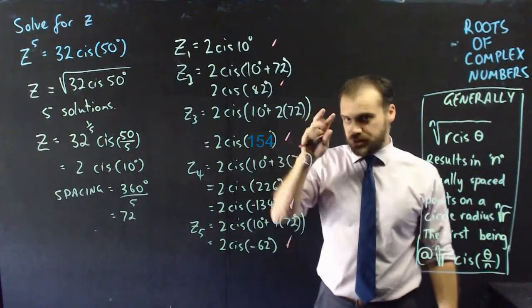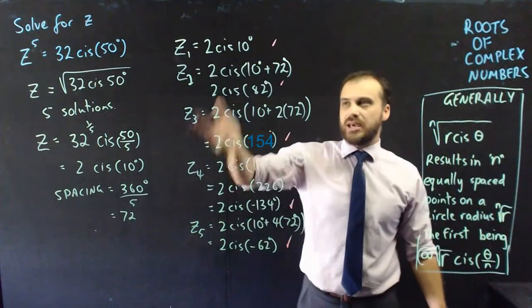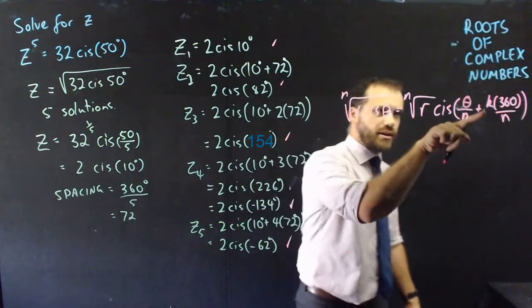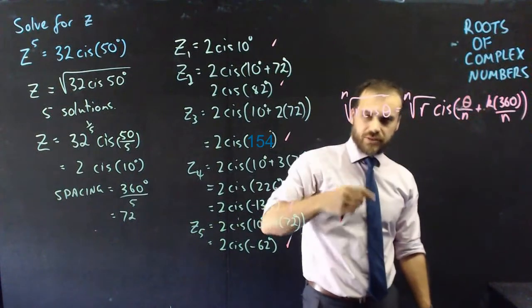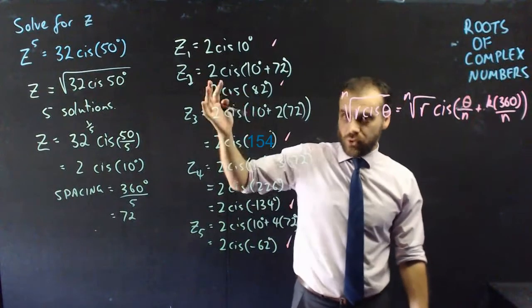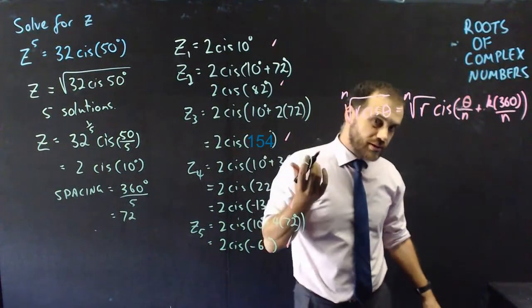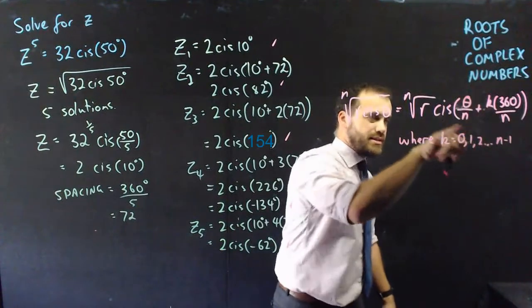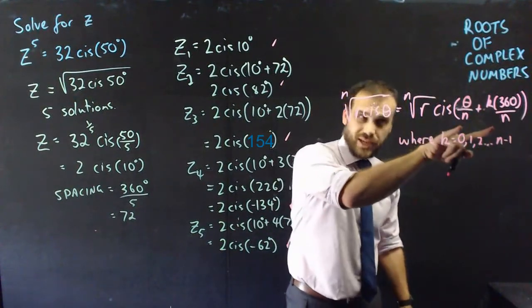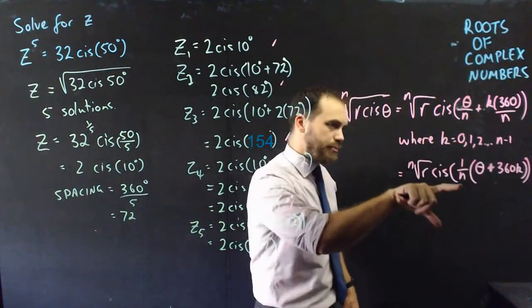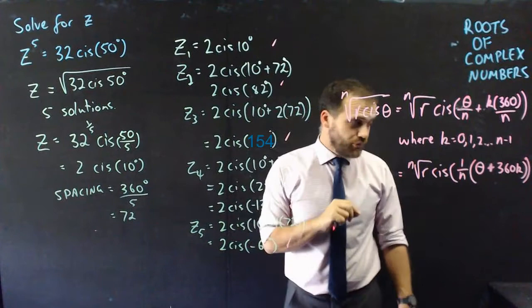Now I will give you a sneaky formula that sort of encapsulates what I've done there. This is a more formal formula. Now k needs to be the values 0, 1, 2, 3, 4 up to whatever n minus 1 is. And of course you can neaten this up a little bit. I've just written it that way because that's how I've explained it but there is obviously a neater way to write that just by bringing that 1 on n out the front.